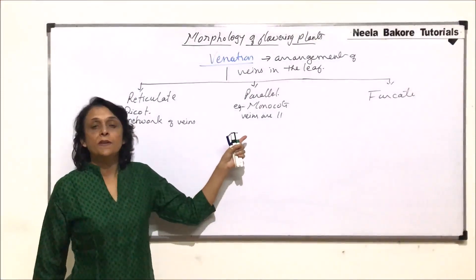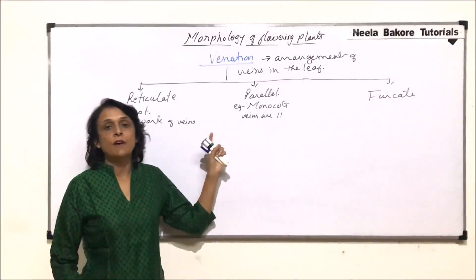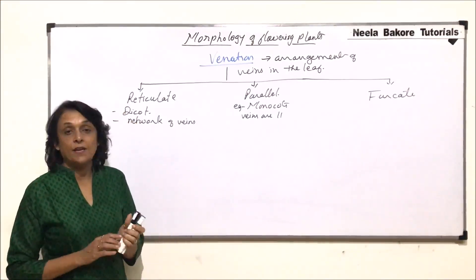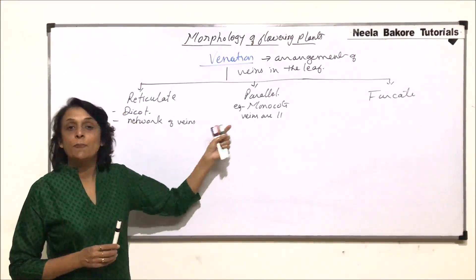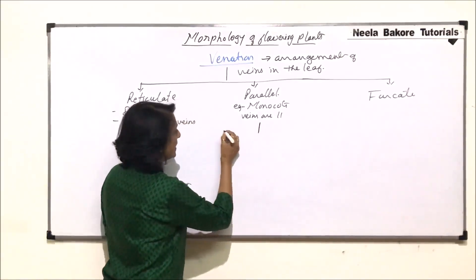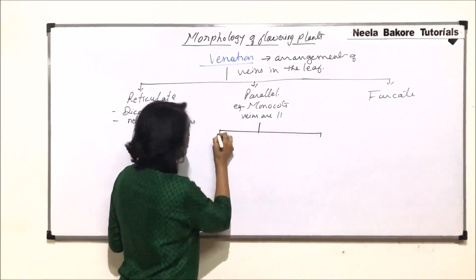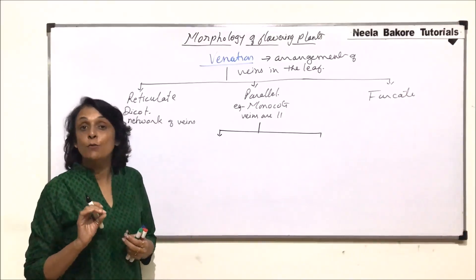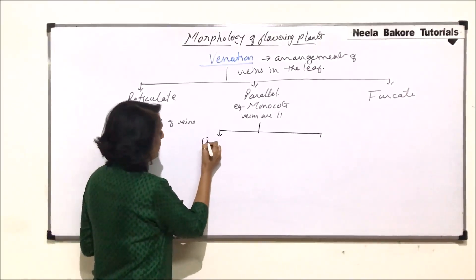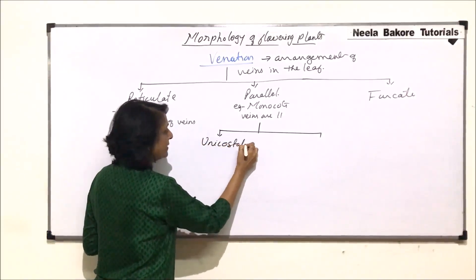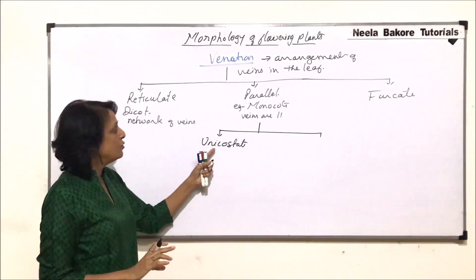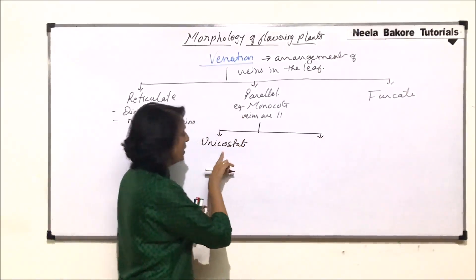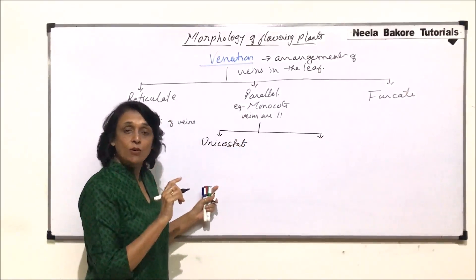We'll continue with venation further. We have already discussed the reticulate type and its classification. Now let us take parallel venation. Parallel venation can again be divided into two categories on the basis of how many main veins it has. It will be called unicostate when there is only one main vein or midrib.